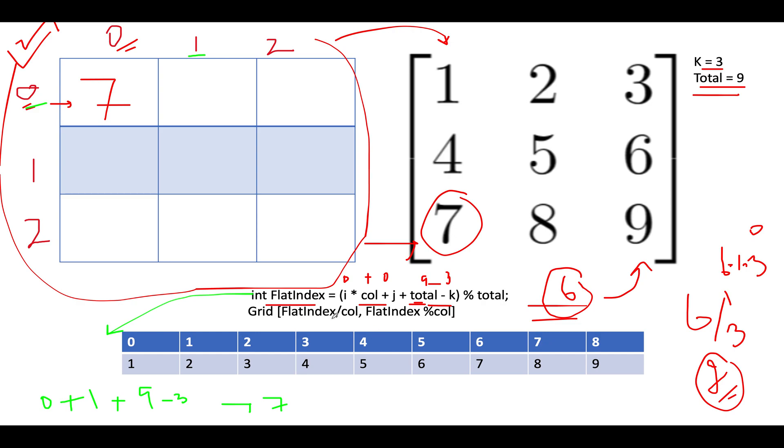So let's apply this formula that we talked about. Flat index divided by column to identify the target ith index that we should look out for. 7 by 3 gives you 2. That means we should look out for the second row. So we reached the second row.